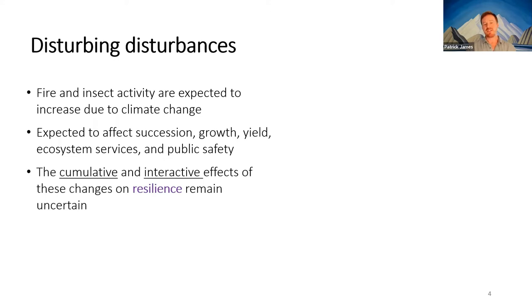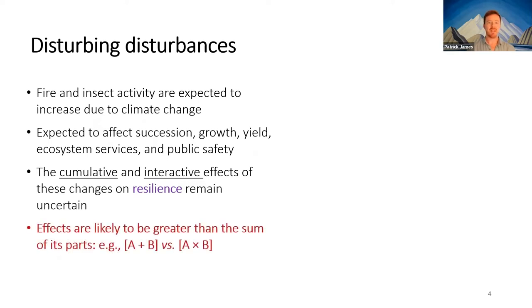The punchline is that the cumulative and interactive effects of these changes on resilience remain uncertain. Resilience here can refer to forest ecosystem health — the ability of forest ecosystems to absorb disturbances and continue providing the services on which we depend — but also the resilience of human social and economic systems to handle massive wildfires, bounce back, and rebuild.